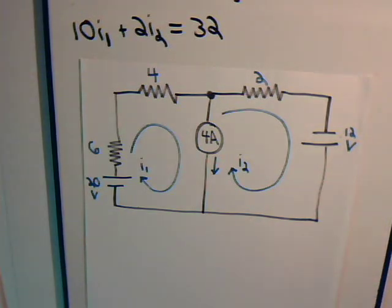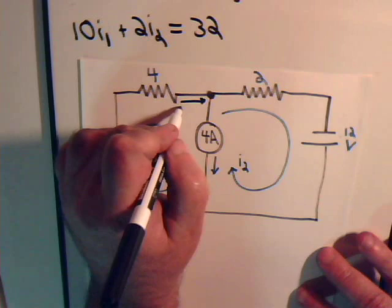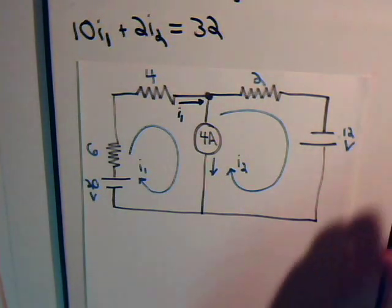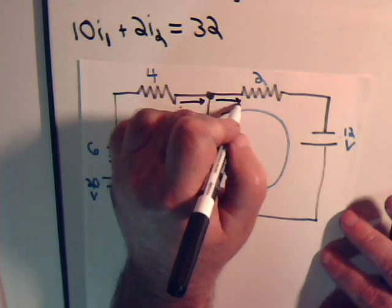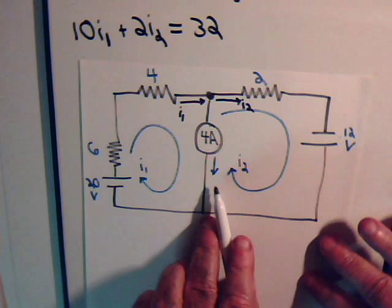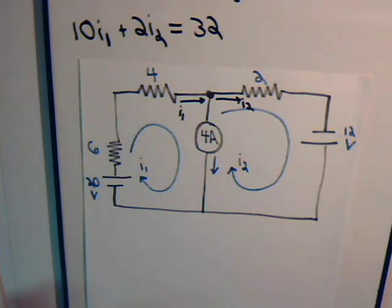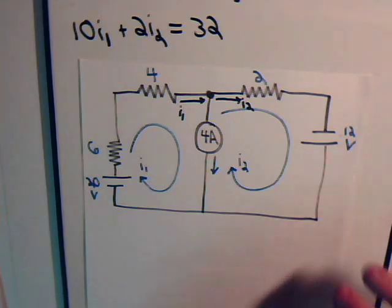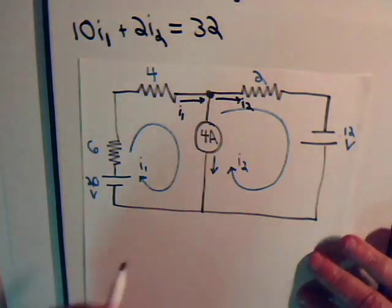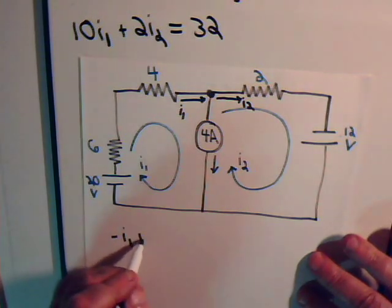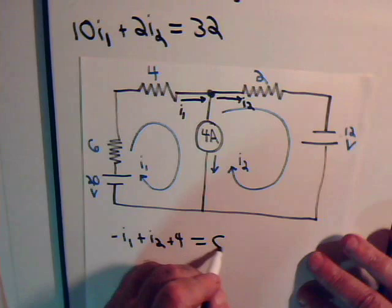If we look at it, current I1 is flowing right into that node. Current I2 is flowing out of that node, and so does this four amps that's flowing in this direction. At any node the net current flow is zero. Currents that go away from the node we write down with a positive value; currents going into the node we write down with a negative value.